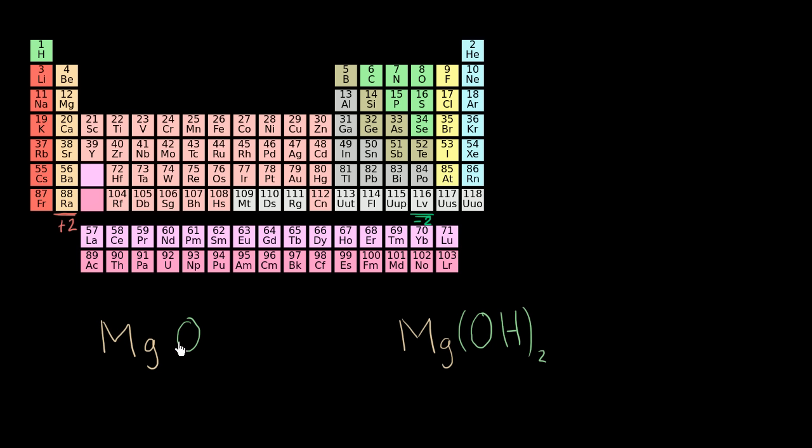So given that, it seems like this could work out. Magnesium could have a +2 oxidation state. And actually, when you write it as a superscript here, the convention is to write the positive after the two. And oxygen would have, or could have, a -2 oxidation state.